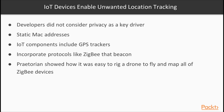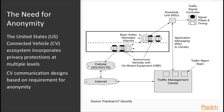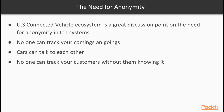A security firm known as Praetorian once showed how easy it is to rig a drone to fly over a metropolitan area and map all of the Zigbee devices. The point being: as developers of IoT products, you need to make sure that you stay on top of privacy safeguards and ensure that no one can track your customers without them knowing about it. The United States Connected Vehicle Ecosystem is a great discussion point on the need for anonymity in IoT systems — you don't want anyone to be able to track your comings and goings while driving.